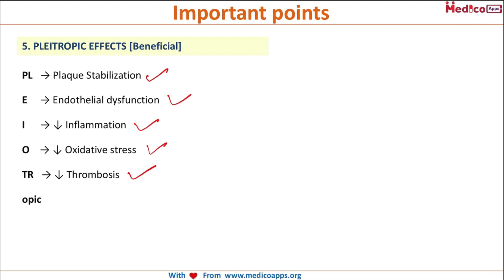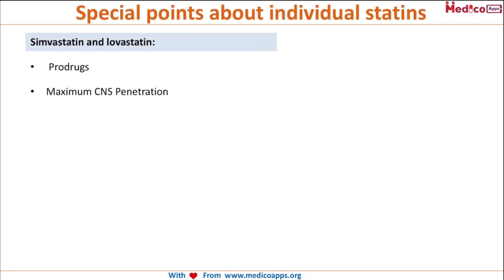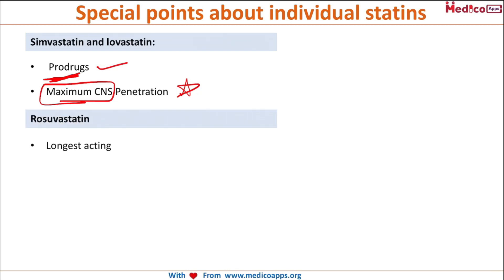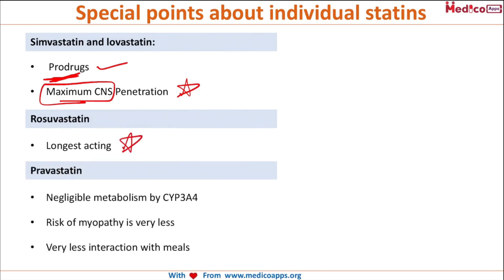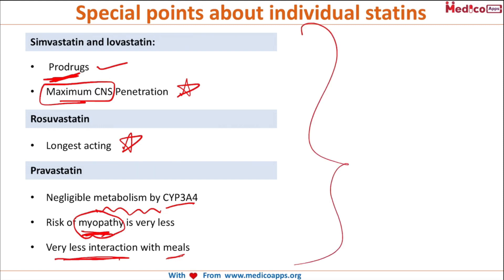A few special points on individual statins: simvastatin and lovastatin are prodrugs and have maximum CNS penetration — they are converted into the active form after consumption. Rosuvastatin has the longest duration of action. Pravastatin has negligible metabolism by the CYP3A4 enzyme, so the risk of myopathy is very low and it interacts minimally with meals. These are important exam points.